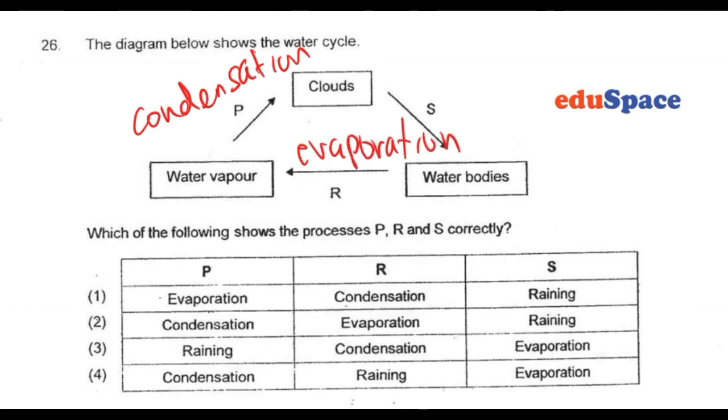So P will be condensation, R will be evaporation. Answer number 2.